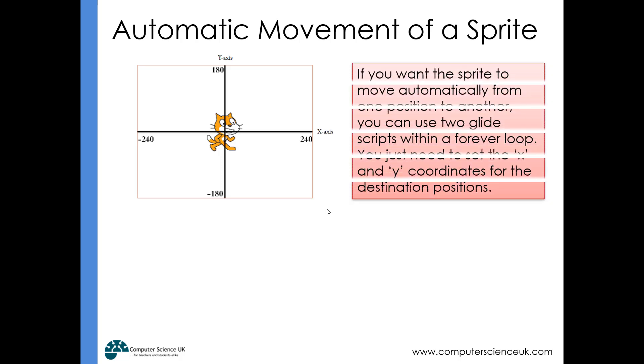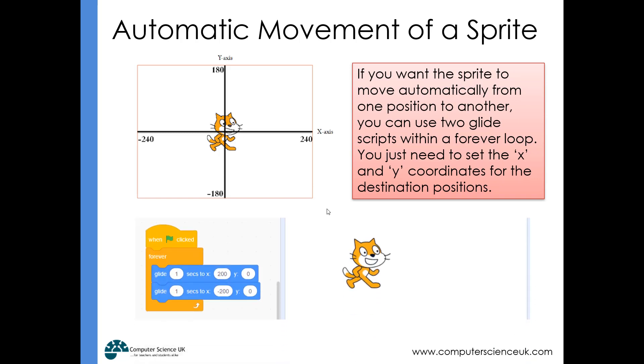If we wanted our sprite to automatically move from left to right, we can use two glide scripts in a forever loop. If we want our cat to move left and right automatically, we say when the green flag is clicked, the cat should forever glide to x being 200, y being zero—that's coordinate (200, 0) over here. It takes one second to glide there. Then we immediately have another glide script that also takes one second, moving the object to the left side where x is -200 and y is zero. The cat would have this automatic left-and-right movement.